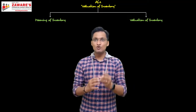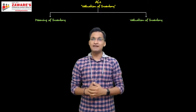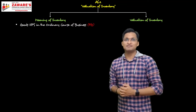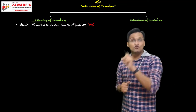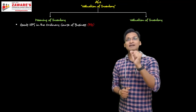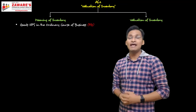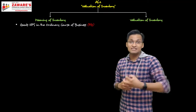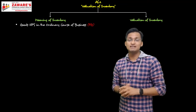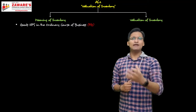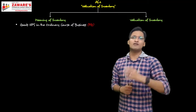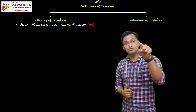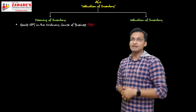Inventory means and includes three things. Number one: goods held for sale (HFS) in the ordinary course of business. HFS means held for sale — things you purchase because you intend to sell them. Goods purchased and held for sale in the ordinary course of business means finished goods. So if a trader buys something, it's because he wants to sell it ahead — that is inventory.